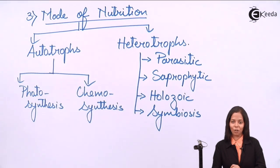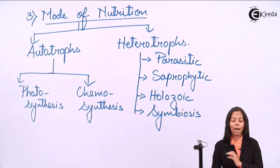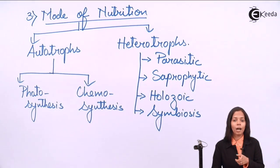Next is holozoic. Holozoic is the process in which the food is completely taken in and that occurs in our case, that is human being. Last one is symbiosis. Symbiosis means mutual understanding. Two organisms come in association, one will help the other in one way and other will help the first one in other way. So they are helping each other. It means they are having symbiosis relationship. Example is lichens.